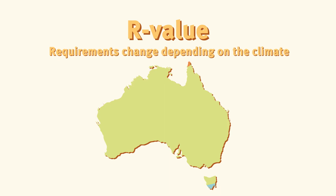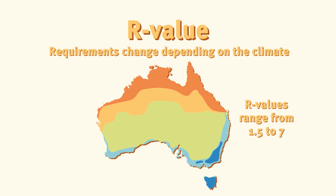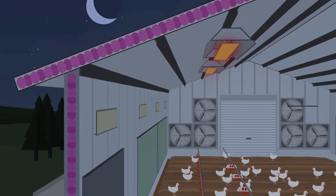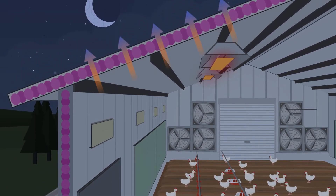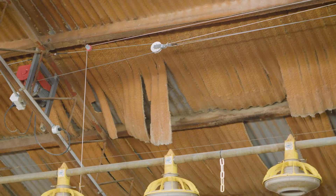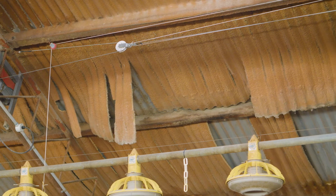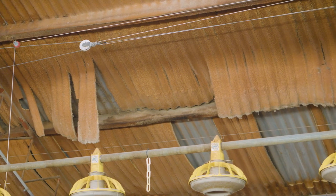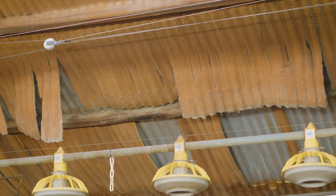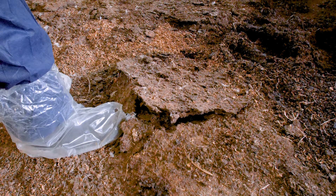The R-value required for your sheds will depend on the climate. Farms in cool climates may need insulation with a different R-value to those in subtropical or warmer areas. The R-value of the roof should be higher than the walls, as this is where the majority of heat is lost. When sheds have inadequate insulation, too much heat can be lost and inside walls will feel cold. The warm, humid air inside the shed will then condense when it comes in contact with the cool wall surface, often resulting in wet and caked litter.